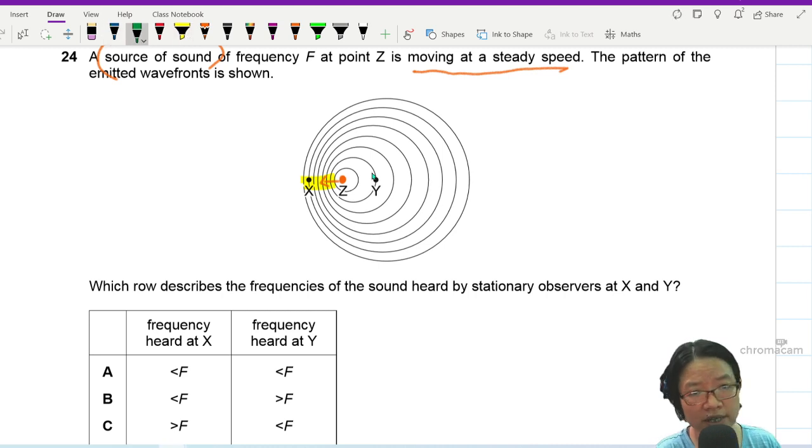So I can say that here, lambda is decreased or lambda is less. So if lambda decrease, frequency should increase, higher pitch. And the reason why frequency is increased is because we are going to keep the speed of sound constant.